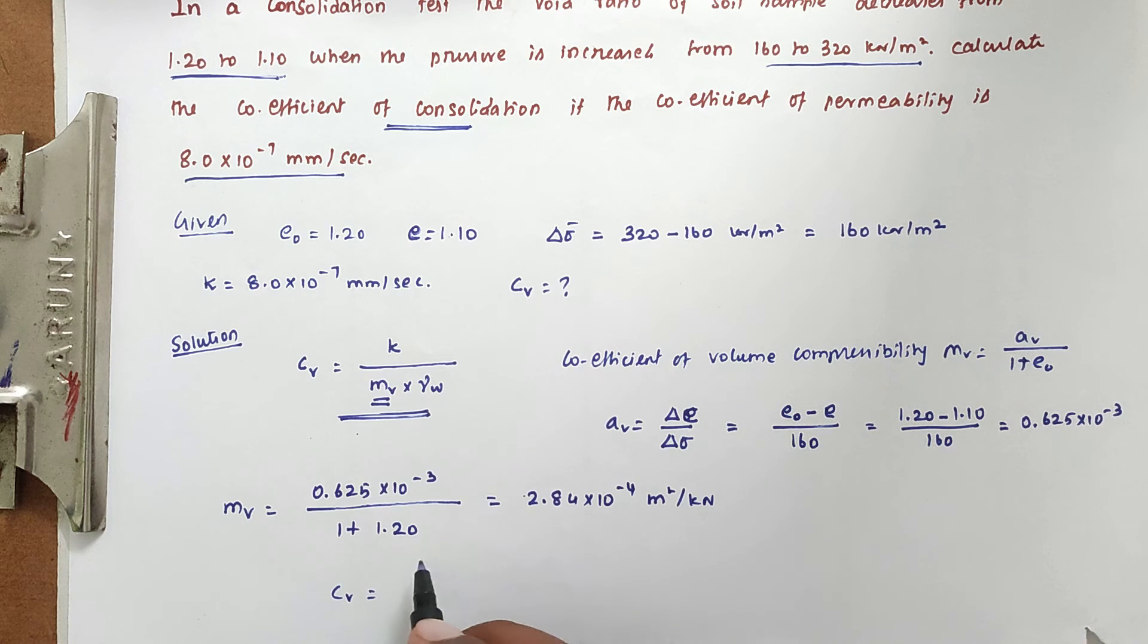We can substitute the values over here. Now mv equals 0.625 × 10^-3 divided by 1.4, which equals 2.84 × 10^-4 per kilonewton per meter square.